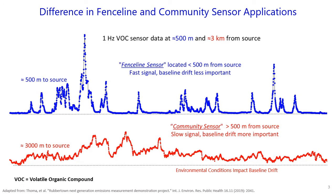We're considering sensors located at a distance greater than 500 meters from a source to be community application sensors. Sensors placed at the community distance do not need to be as fast because plumes have spread out and sharp spikes of signal are no longer present. The baseline drift level becomes more important in this case because the algorithm we use to remove drift can also remove true signal, so it can't always be used.